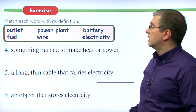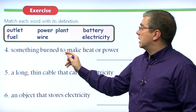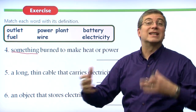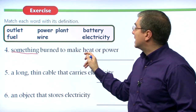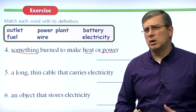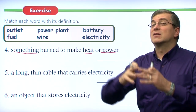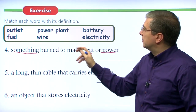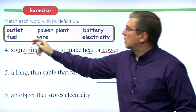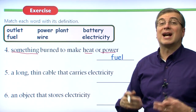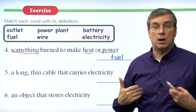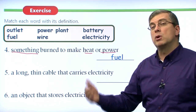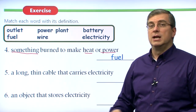Number four: something burned to make heat or power. There are lots of different kinds. We burn fuel to make heat or power. Remember — it's many different things: wood, food (our bodies use food as fuel), and gas is a very common type of fuel we put into our cars and trucks to make them go, to give them power.